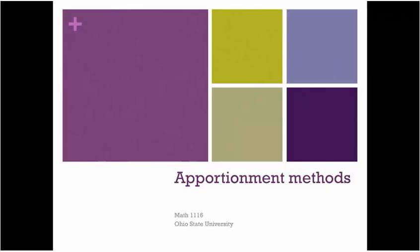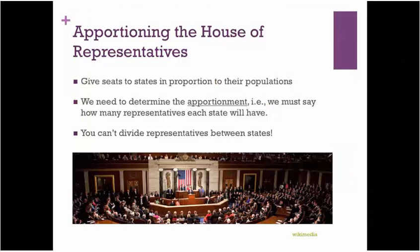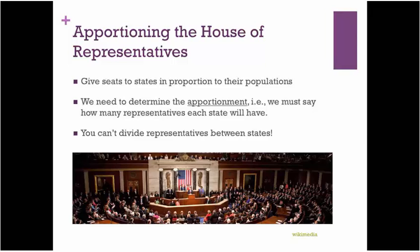In this lecture, we're going to look at apportionment methods. Let's begin by reviewing what we mean by apportionment. The example we're going to use is the US House of Representatives. According to the Constitution, we're supposed to give seats to the individual states in proportion to their populations. We must determine exactly how we do that — how many representatives each state will have. That might sound trivial, but the problem is you can't give fractions of representatives, and you can't divide representatives between states. So there are some real mathematical issues here.